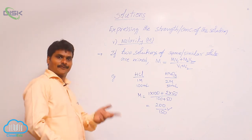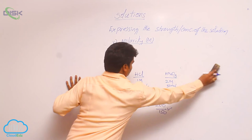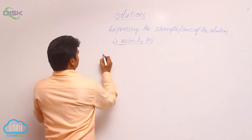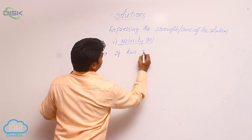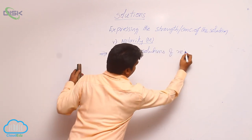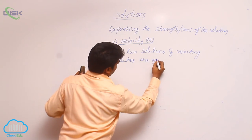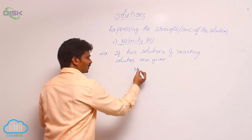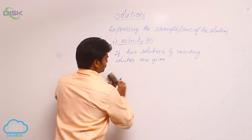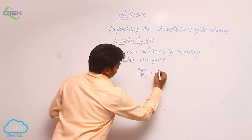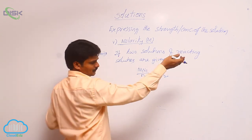What if two different solutes that react with each other are given? Then we use a different formula: M1V1/n1 = M2V2/n2. Here, n1 and n2 are not the number of moles — they are the coefficients of the respective solutes in the balanced chemical equation. Take subscript 1 terms for one solute and subscript 2 terms for the other.